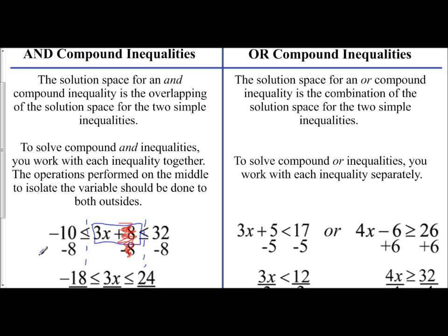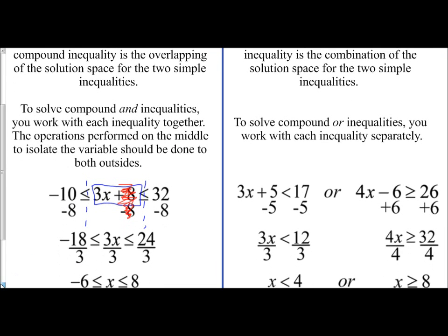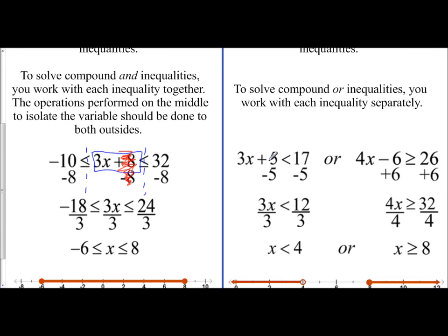So if I take a look, I have a setup of an or compound inequality. It says 3x plus 5 is less than 17 or 4x minus 6 is greater than or equal to 26. Well, these are just two simple inequalities. So I just work with the first one, subtract 5 from both sides, then divide by 3, and I get x is less than 4.